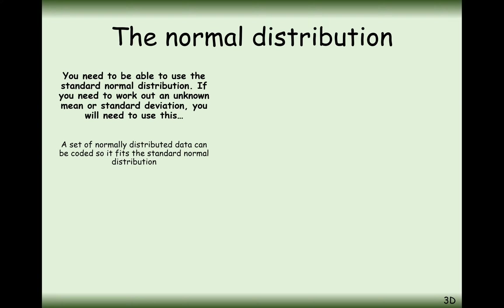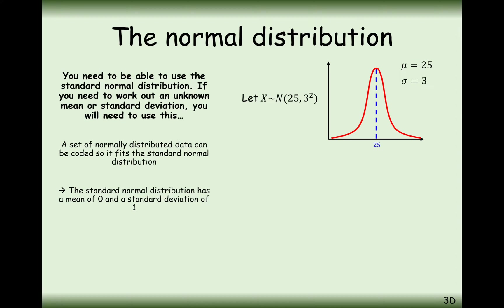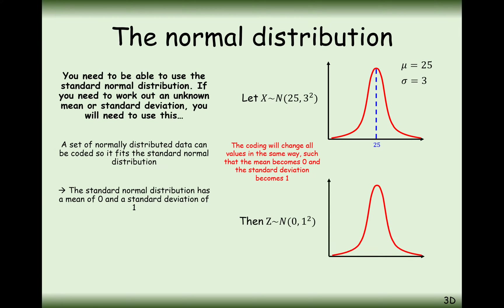The standard normal distribution is how we used to calculate normal distribution probabilities before we had that fancy mode on the calculator. We always used to revert any sort of normal distribution, such as one with a mean of 25 and a standard deviation of 3, back to a normal distribution where the mean is 0 and the standard deviation is 1. There's a very complex mathematical formula to work out these probabilities, and there's a slight adjustment in your calculations to get back to a probability concerning any normal distribution — a kind of coding from the standard normal distribution to your specific distribution for the question you're working with.